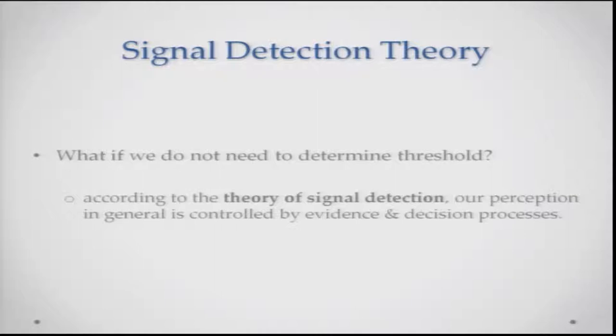We have been talking about the importance of thresholds. How would it be if we do not need to determine threshold in the first place — can we do with a related concept which does not merely depend on determining at what point somebody perceives a particular physical stimulus? According to signal detection theory, our perception in general is controlled by evidence and decision processes. Any stimulus in the environment can be treated as evidence. Signal detection theory assumes these processes as a sum of both evidence, which is a property of the stimulus, and decision processes, which are a property of the perceiver.